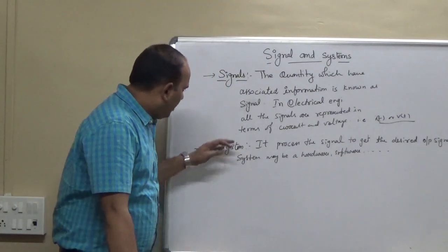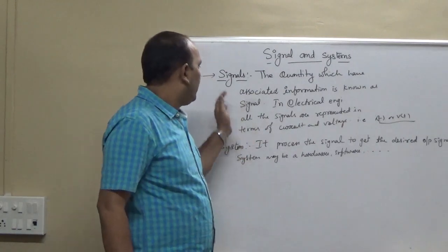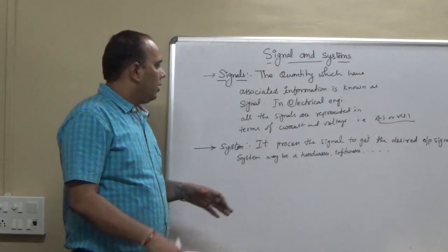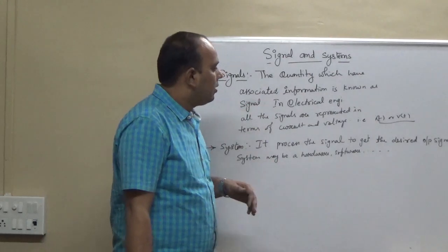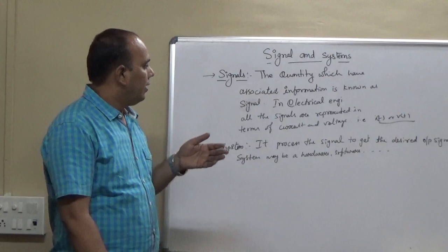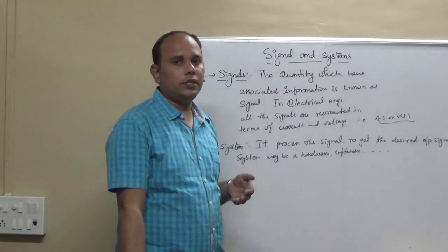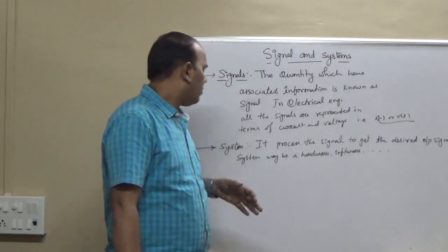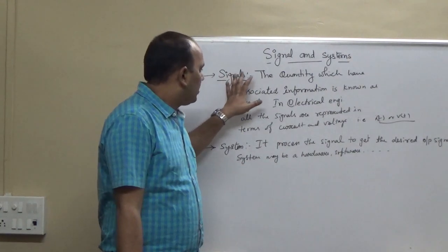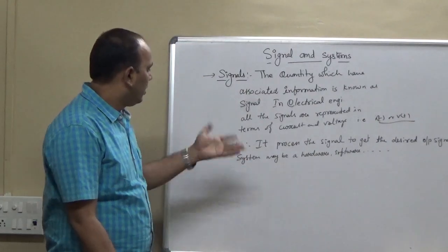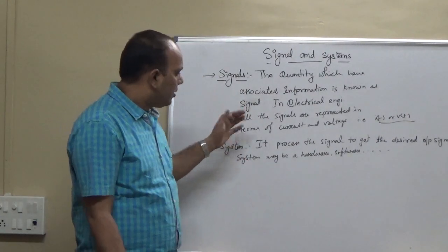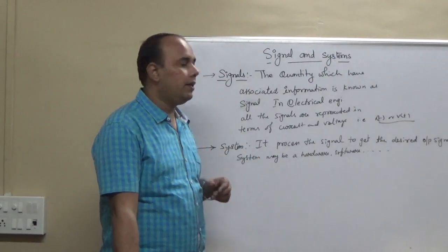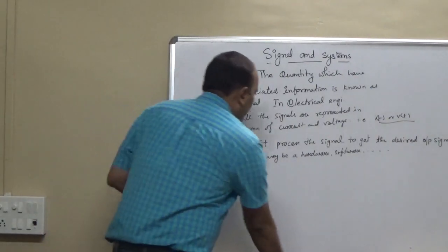In terms of electrical or electronics, signals are just representations of current or voltage. But basically, signals are defined in terms of the unit step function, ramp function, triangular function, square function, exponential function, and so on. All signals will be represented in terms of these functions, and systems are always any hardware, software, electrical, or mechanical equipment.